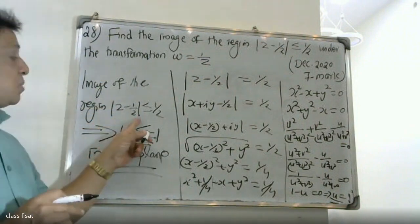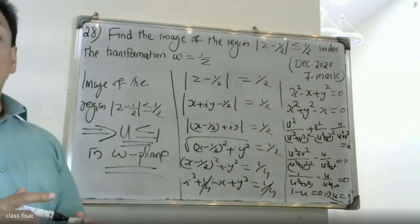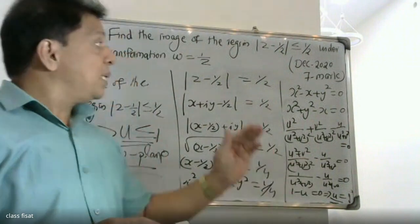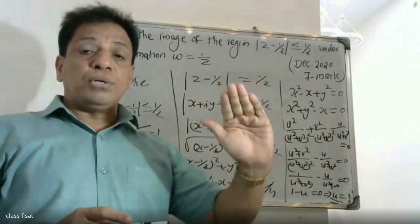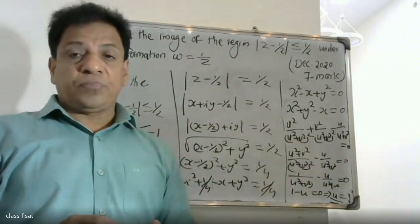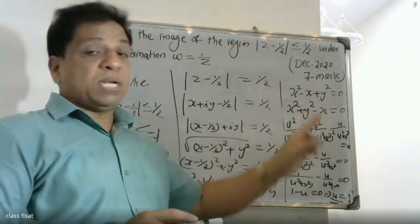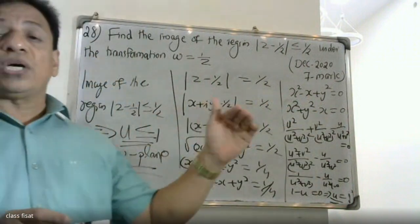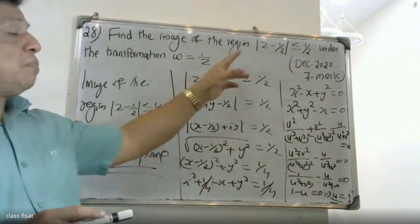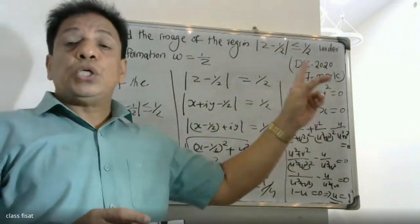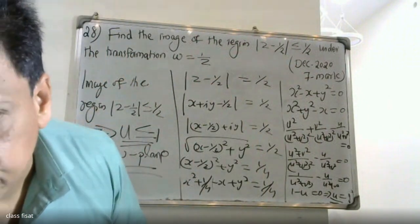Therefore, the final conclusion: the image of the region mod(z + 1/2) less than or equal to 1/2 under the transformation w = 1/z is u less than or equal to 1 in the w-plane.